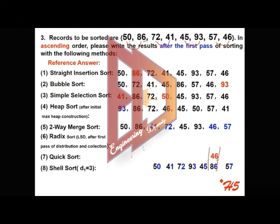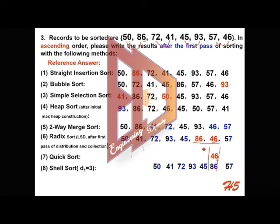Each queue with the same digit is a first-in, first-out structure. So 46 will be inserted after 86 since they share the same ones digit. Then collect all the elements one by one. You can see the list has been sorted according to the ones place. Pay attention: 46 must appear after 86 because the queue is a first-in, first-out structure.